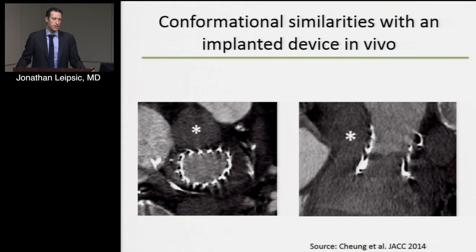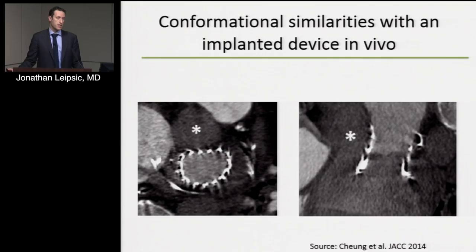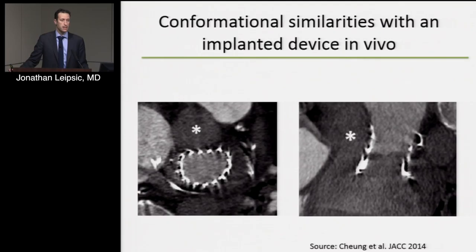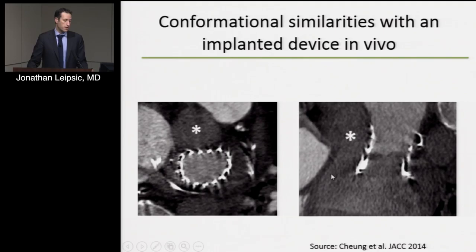Importantly, this D-shaped approach is not only theoretical — it actually has conformational similarities to post-implant appearances of these transcatheter mitral valve devices. There are now a number of devices implanted in humans, including transcatheter annuloplasty, MitraClip, and frank replacement of the valve. Most of these valves up until now have been deployed transapically but are now being deployed transseptally. You can see the Tiara device, which has a D-shaped configuration, allowing it — with its D pointing laterally — to be protective of and respectful of the left ventricular outflow tract.